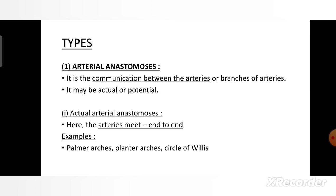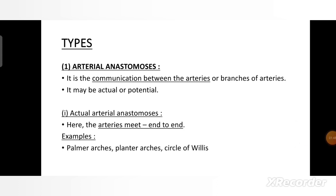Types of anastomosis: First is arterial anastomosis — the communication between the arteries and branches of the arteries. It can be actual or potential. First is actual arterial anastomosis, in which arteries meet end to end. For example, palmar arches, plantar arches, and the circle of Willis.